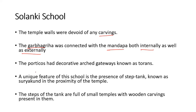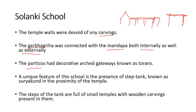A Portico is present in Solanki temples — a pillared approach leading to the Garbhagraha. At the end of the Portico there is an arch-shaped gateway decorated with ornaments, which is called a Toran — similar to the Torans found in Stupa architecture. Another significant and unique feature of this school is the presence of a Step Tank, called Suryakund.